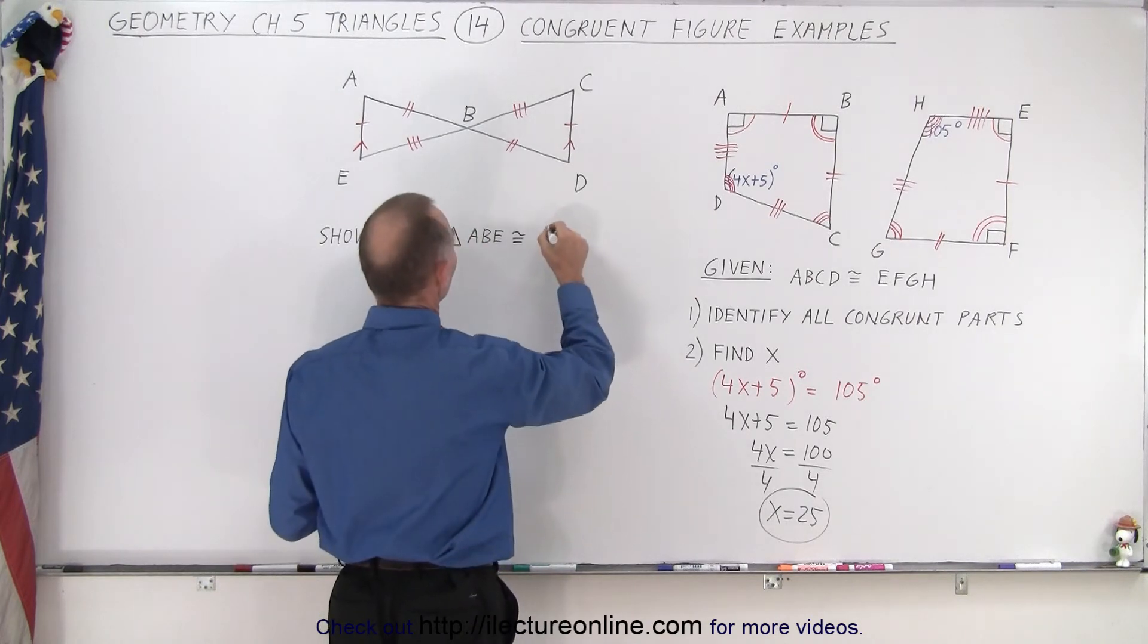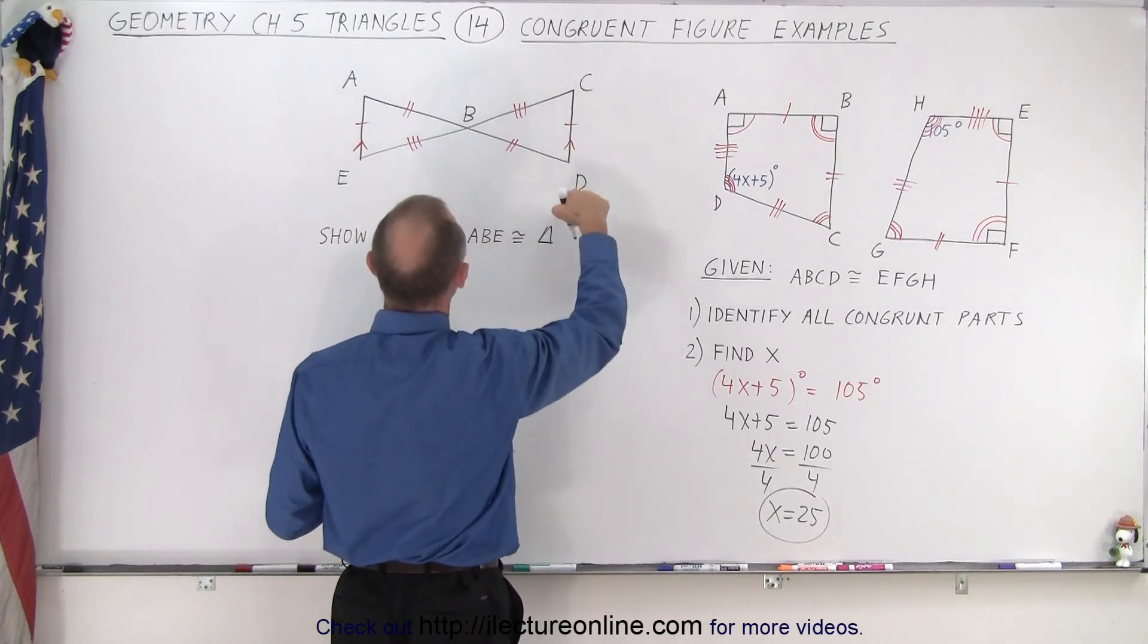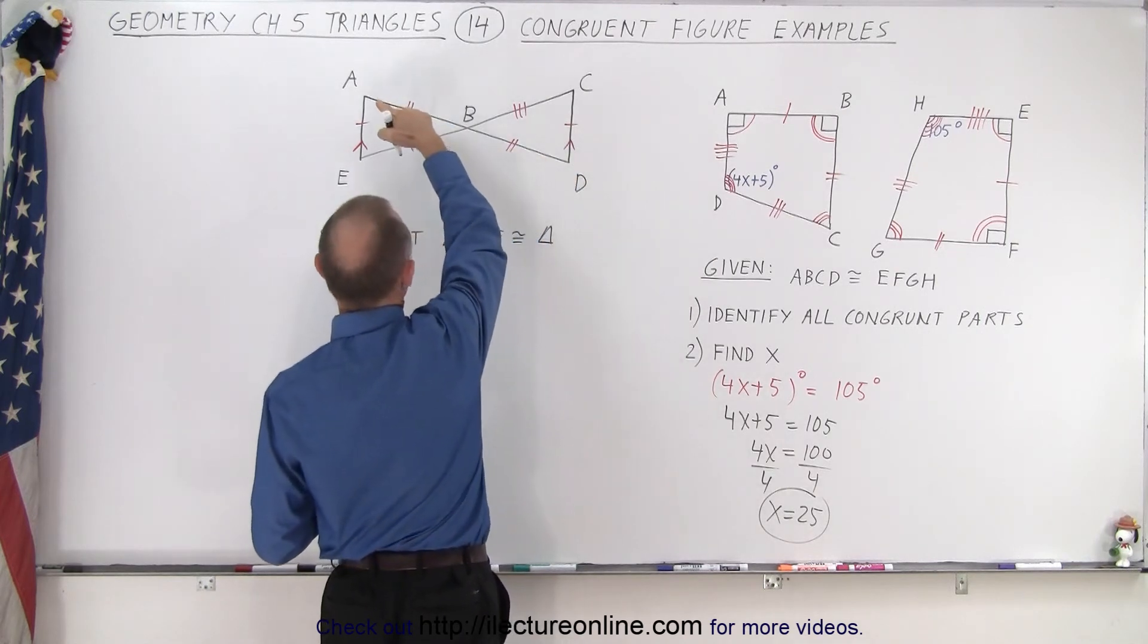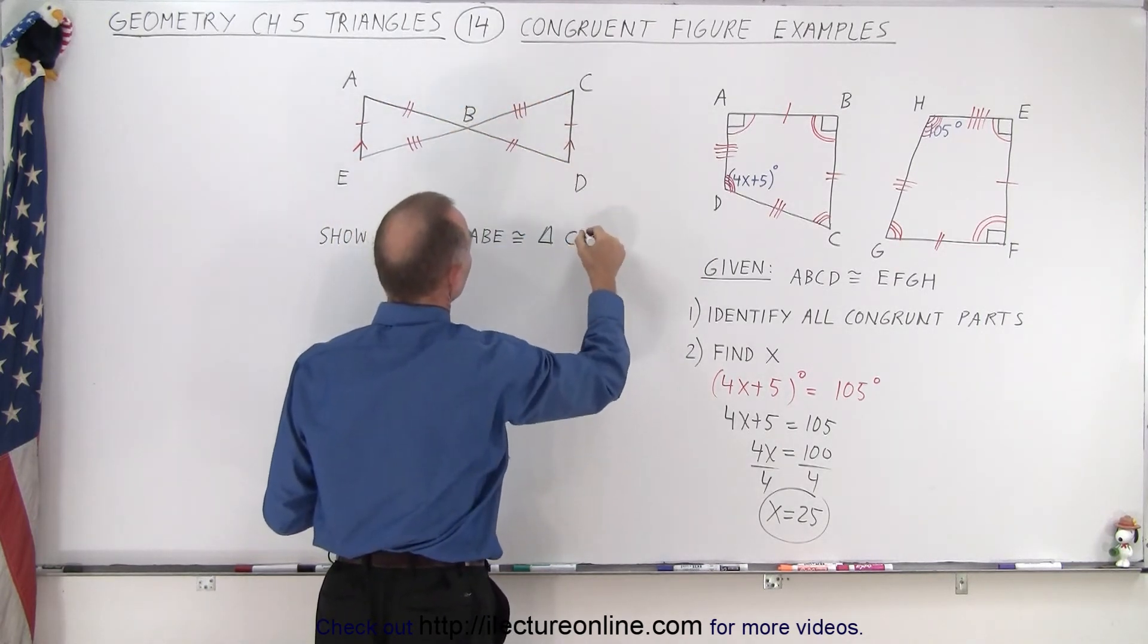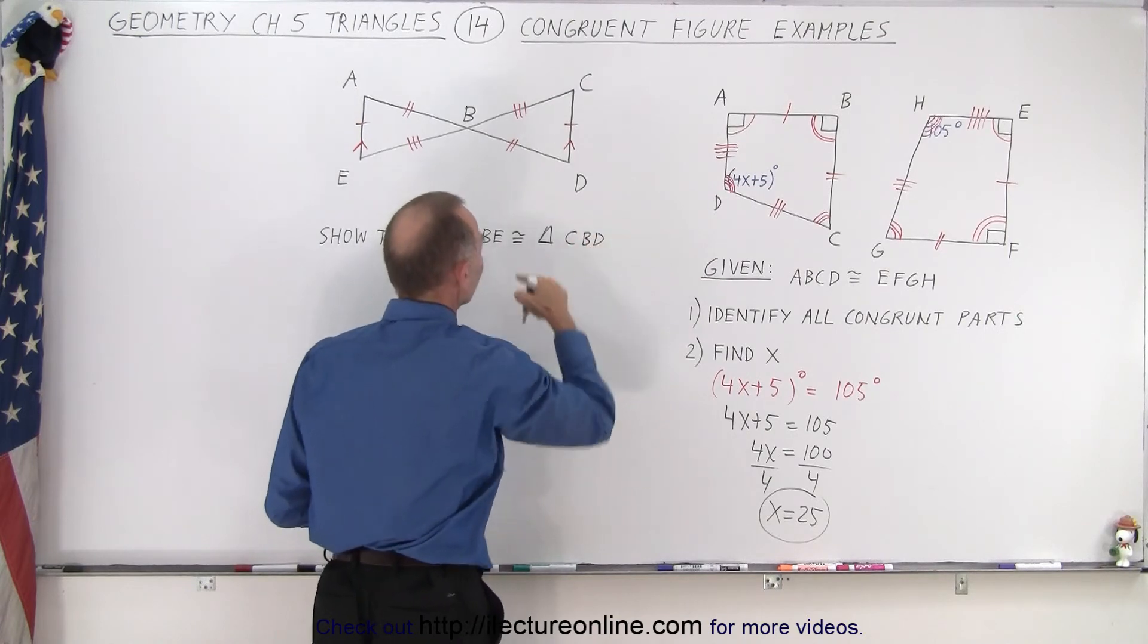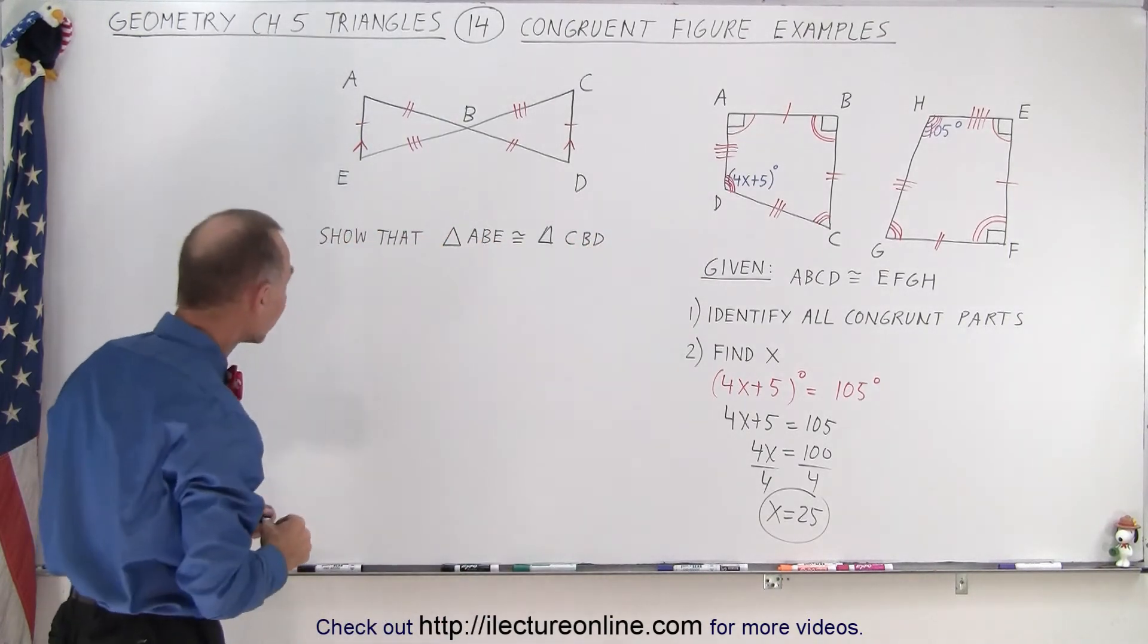I should have this as angle C, D. So we go from A to B to E, C, B, D. All right, C, B, D. There we go. I was missing my triangle over here. All right. So now we're supposed to show that those two triangles are congruent.